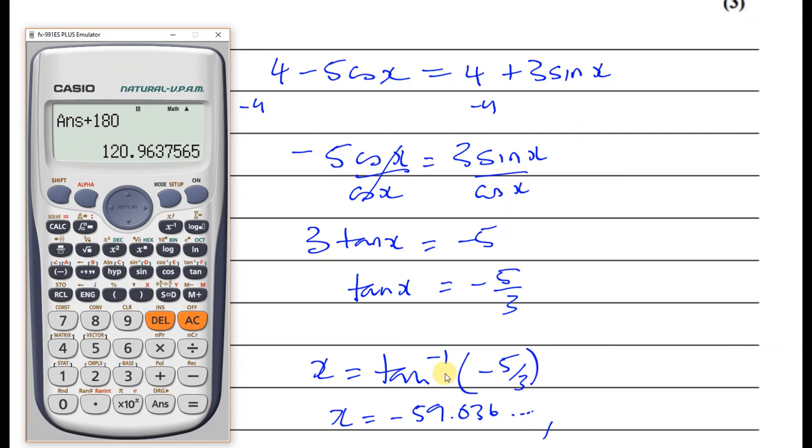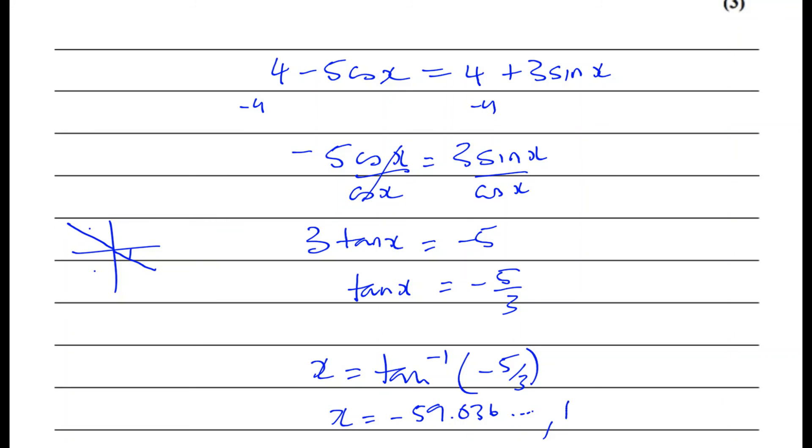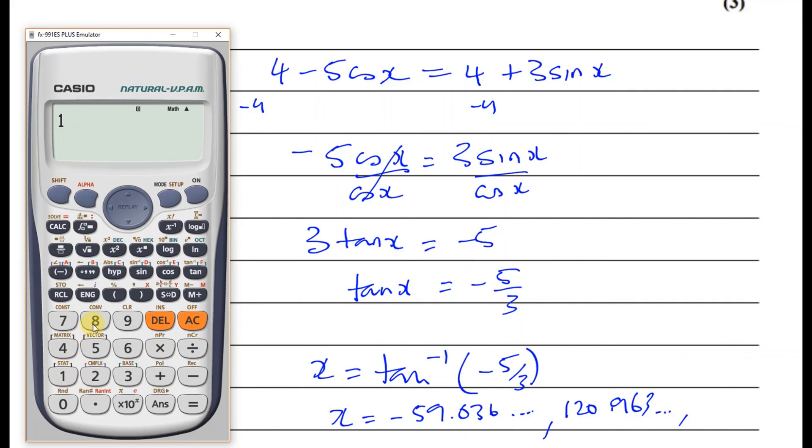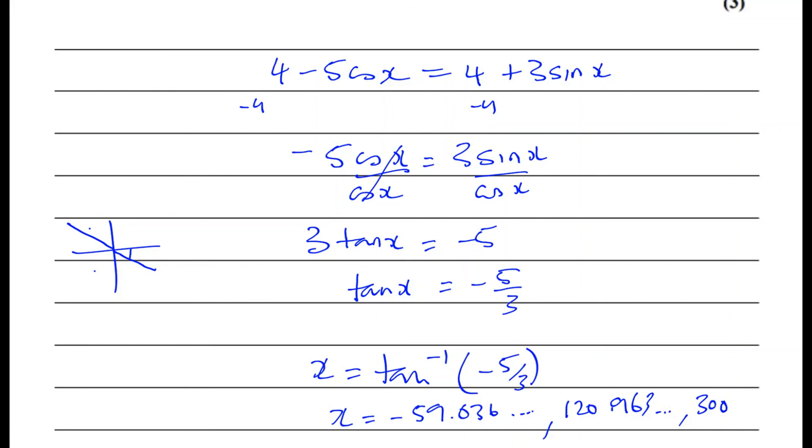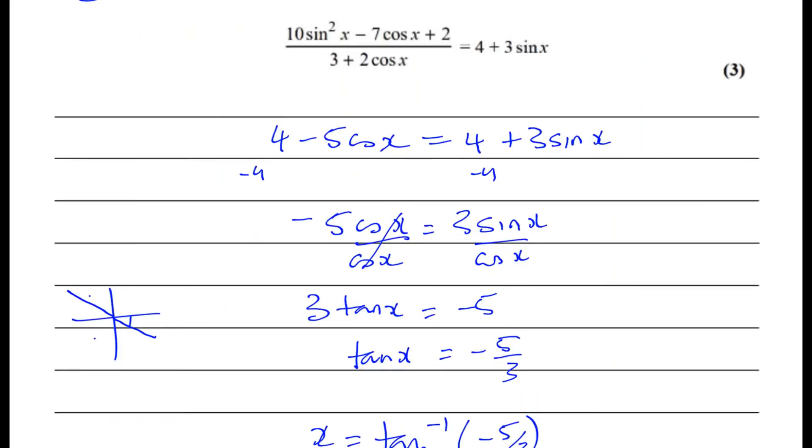And that gives me 120.963. 120.963 dot dot dot. And then I can add 180 again. I've got a limit of 360. Answer plus 180, 300.963 of course. 300.963 dot dot dot. I haven't rounded, I've just written some of the numbers on it. And of course if I add another 180 it's going to be out of the range.